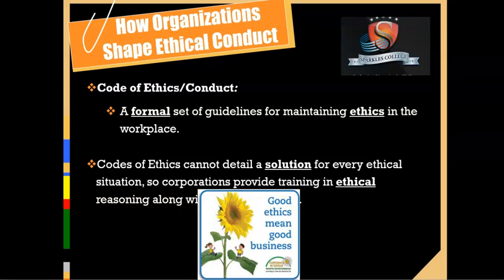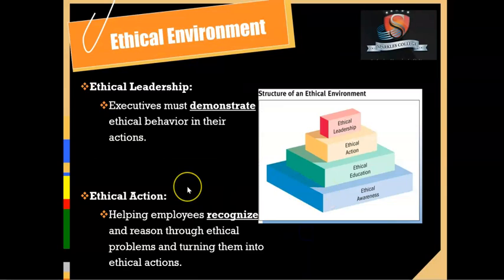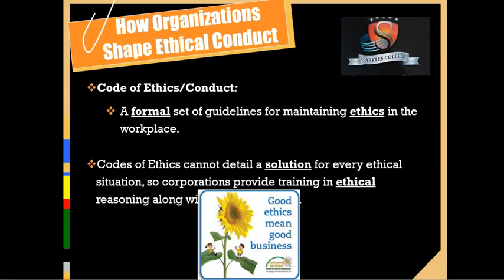How organizations shape ethical conduct: code of ethics is a formal set of guidelines for maintaining ethics in the workplace — defining what's right and wrong, setting boundaries and benchmarks for what needs to be done or not done in an organization, backed by moral values. Codes of ethics cannot detail a solution for every ethical situation, so corporations also provide training in ethical reasoning. The goal is that even in situations where you're not told what to do, you still know what's right and wrong because you have those codes of ethics with you.